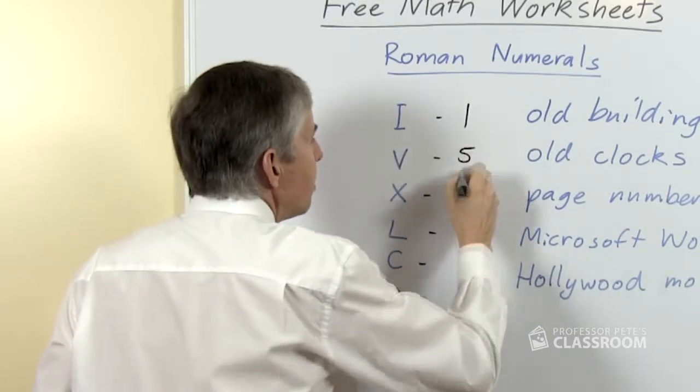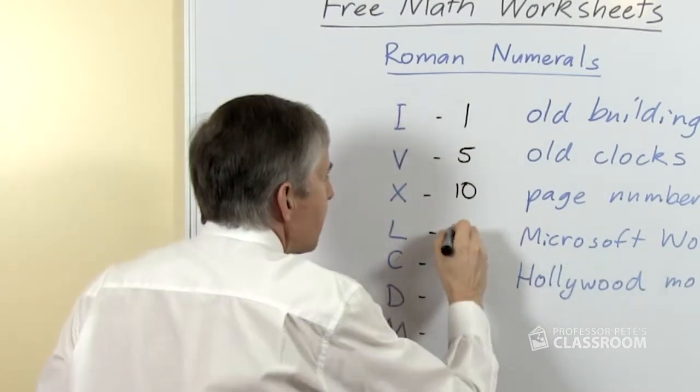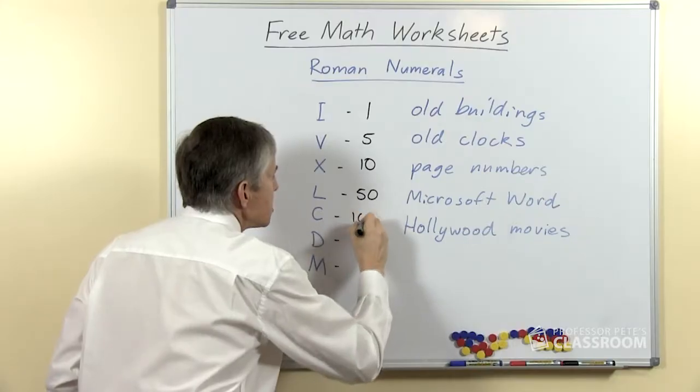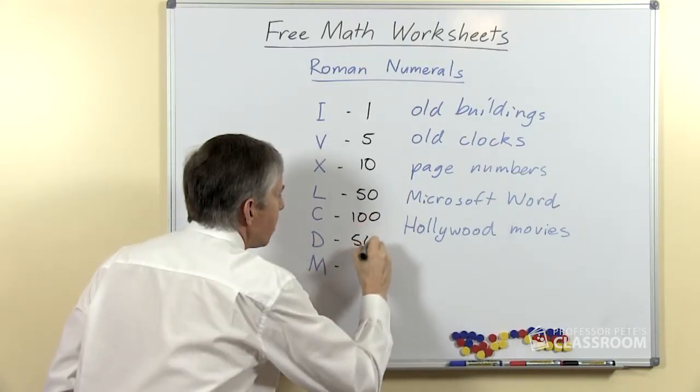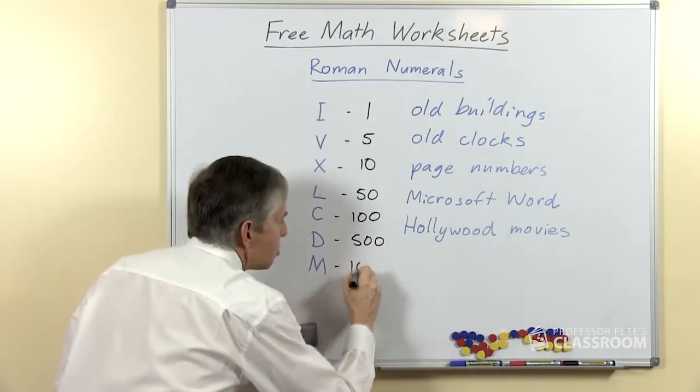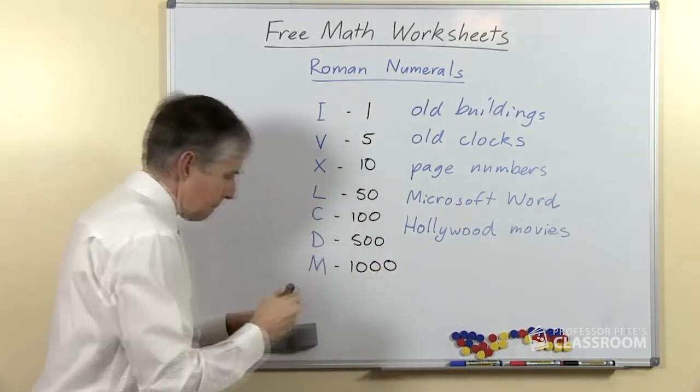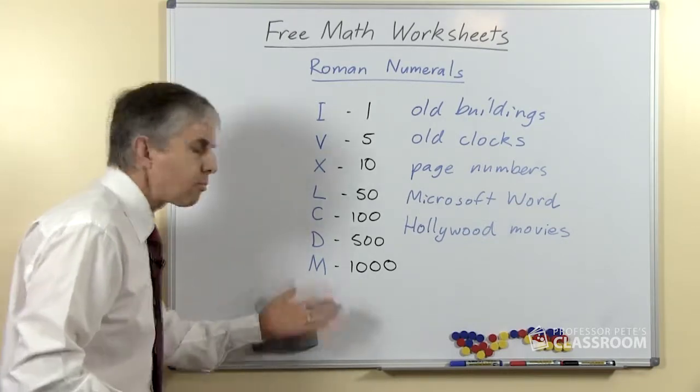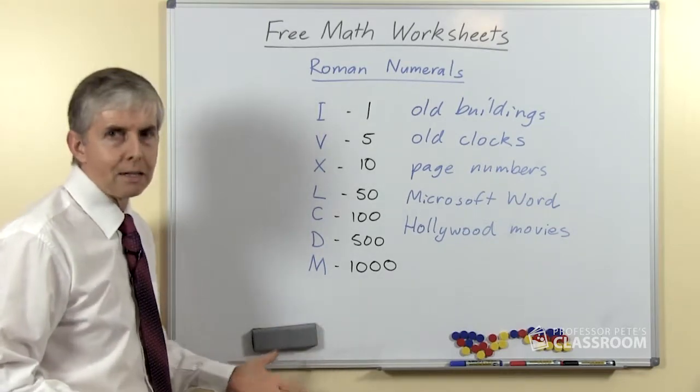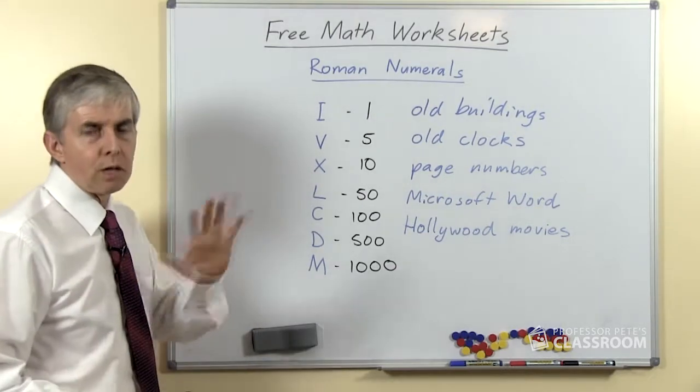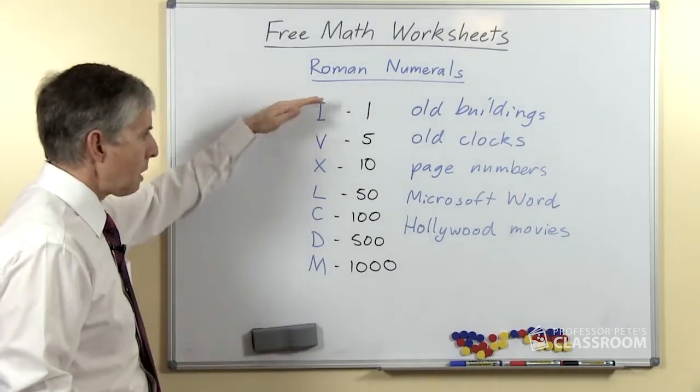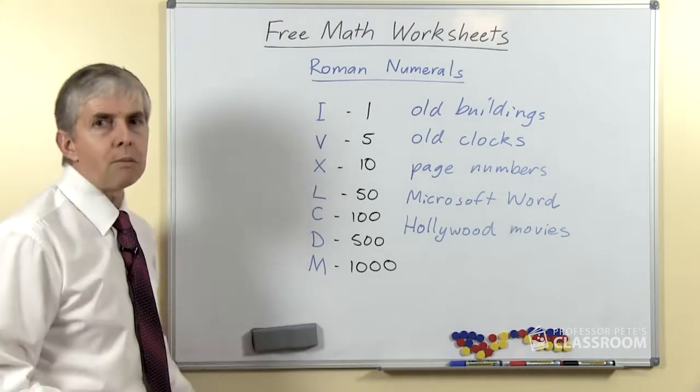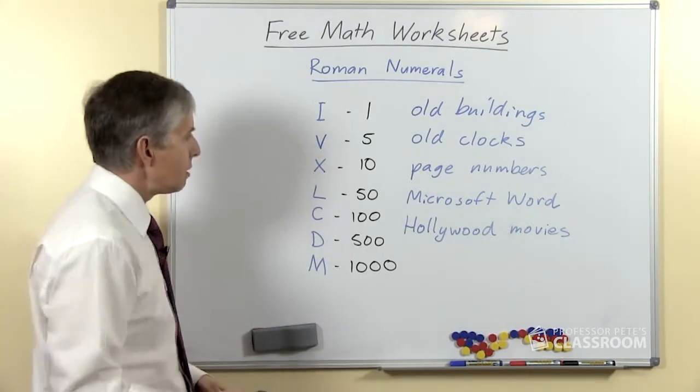V is 5, X is 10, L is 50, C is 100, D is 500, and you can probably guess M is 1000. So we have symbols to make numbers all the way up to thousands. We can't really go much further than that—there is an advanced way which I won't talk about today, you can look it up—but basically we can show numbers up to the thousands using Roman numerals.